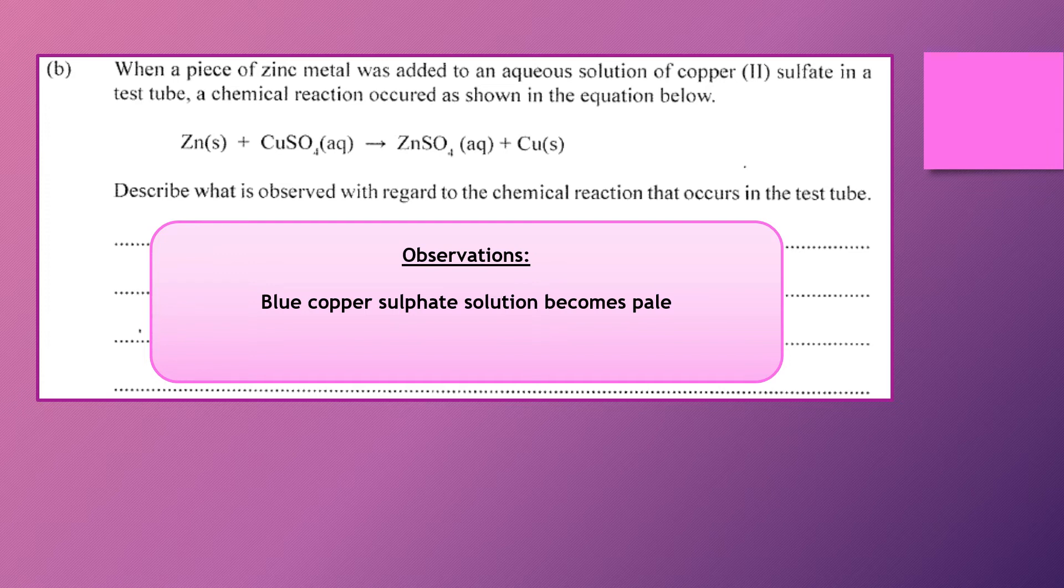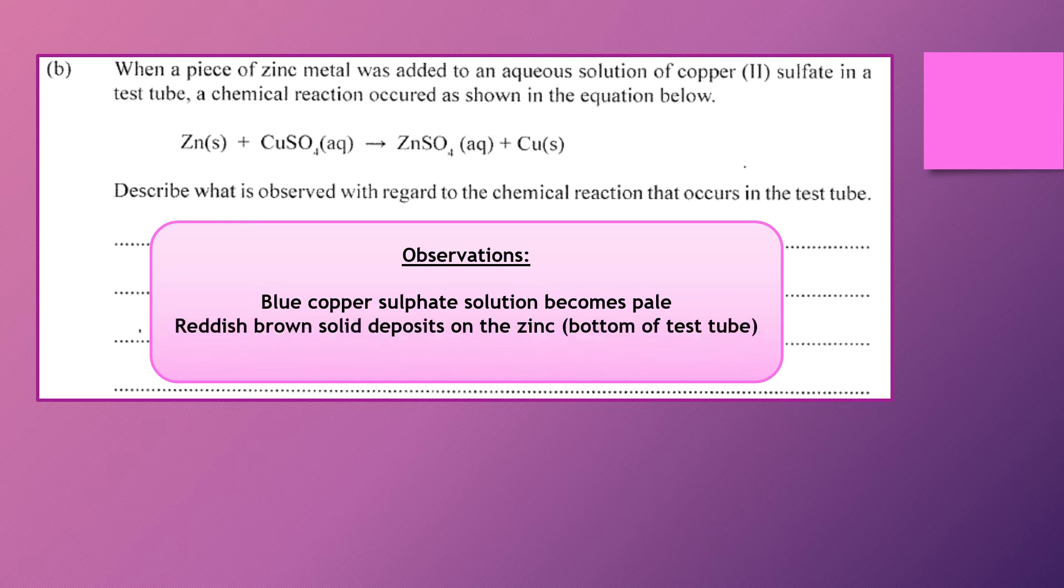You would also note that since based on the equation, some copper solid is being formed, you will see those copper deposits, reddish brown solid, either in the bottom of your test tube or on the zinc, the zinc metal that is placed in the solution.